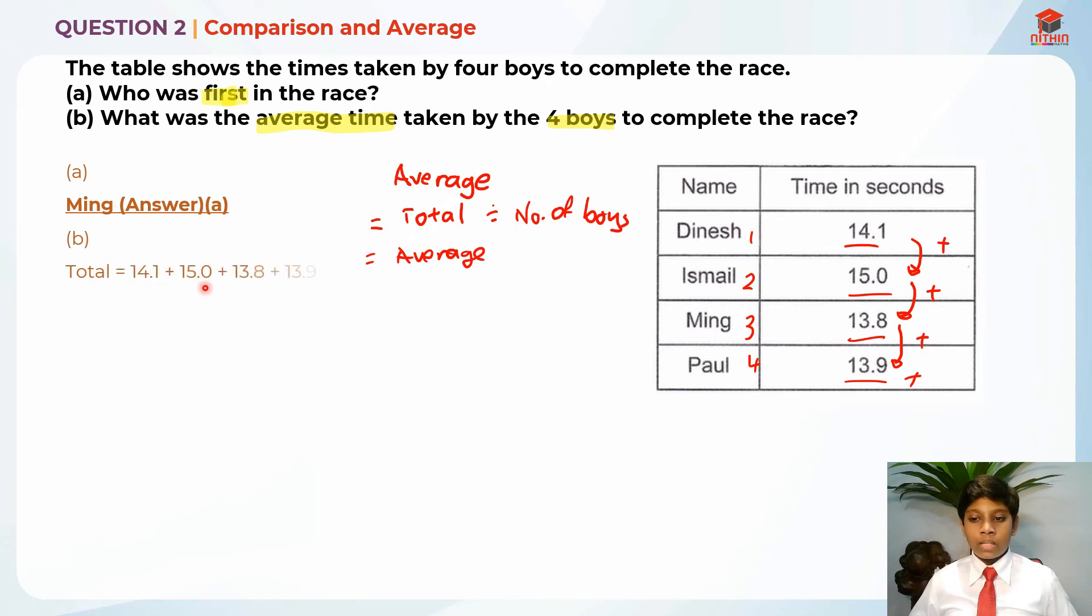which will give us 56.8. And then we know that the number of boys is 4. So basically average is equal to total divided by number of people or number of boys, which will give us 56.8 divided by 4, because there are 4 boys.